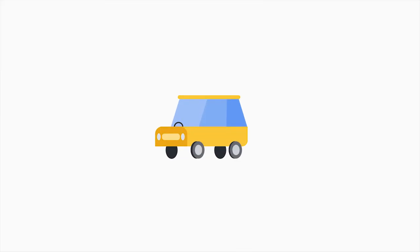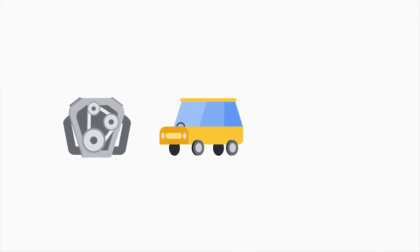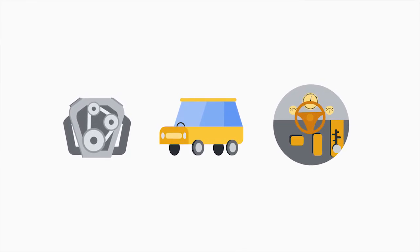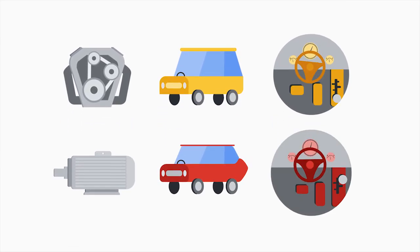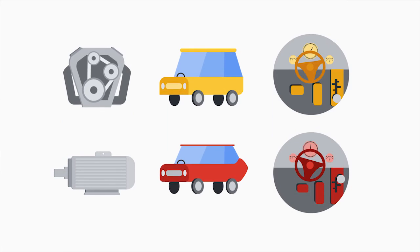You use abstraction every day in the real world and you may not even know it. If you've ever driven a car, you don't need to know how to operate the transmission or the engine directly. There's a steering wheel, some pedals, maybe a gear stick. If you buy a car from a different manufacturer, you operate it in pretty much the same way, even though the stuff under the hood might be completely different. This is the essence of abstraction.